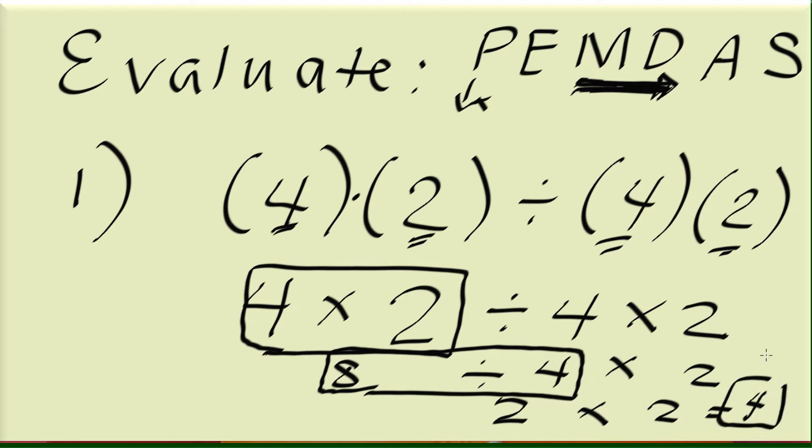It's not going to be 1, because we have to follow this order of operations. That's the correct sequence of steps. So the answer is 4, not 1.